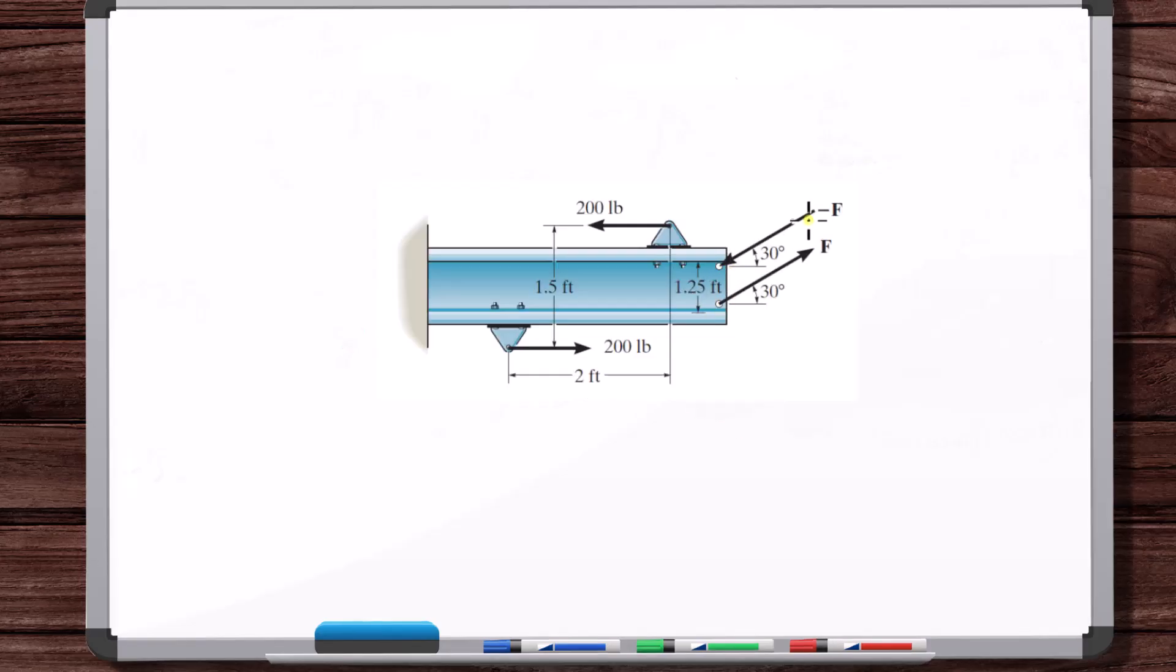Couple moments are the result of equal and opposite forces that are parallel to one another but separated by a distance, like shown here, or like shown here. You can convert each of these force pairs into a couple moment, and so you've converted each of these pairs into a couple moment, so you can remove the forces, and you're left with these two couple moments,